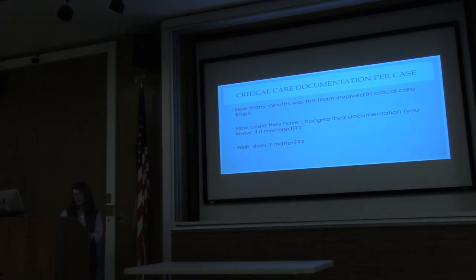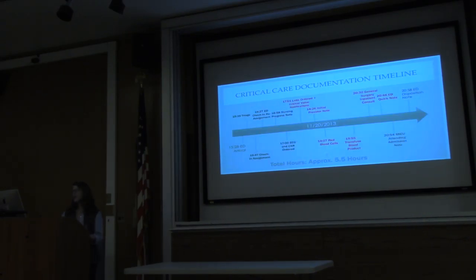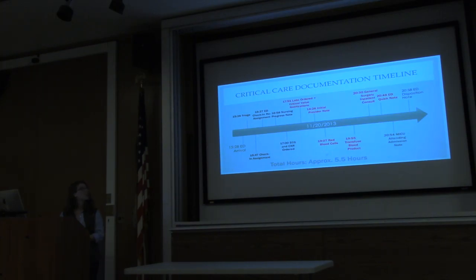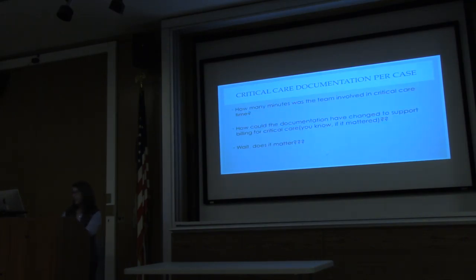How many minutes was the team involved in critical care? The quick note, which states the first critical stuff, to DISPO is 12 minutes. But 19:07 to DISPO is about 111 minutes — that's the potential for critical care intervention during that time. It probably wasn't 111 minutes straight critical care, but based on what I saw on the chart this guy was relatively stable the whole time. But I think within all of this you could at least get a 99291 — at least 30 to 74 minutes of critical care performed for this patient.